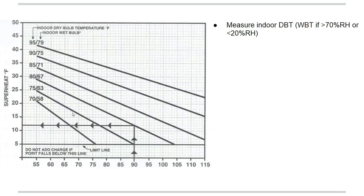The first thing you're going to do is go inside the home and check the relative humidity of the indoor space. If it is above 70% relative humidity or below 20% relative humidity, you must use the indoor wet bulb temperature. You won't find these conditions very often, but you still need to make sure that you're within the 20-70% range of indoor humidity.